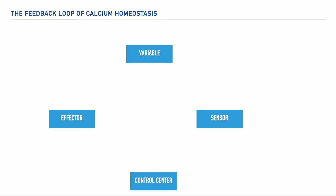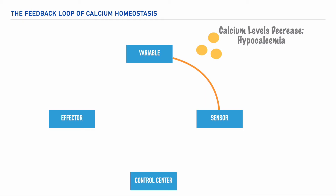So in our first example, let's imagine that we have someone who hasn't been supplementing their diet with sufficient amounts of calcium. It would be plausible for them to be in a state of hypocalcemia, which means low amounts of calcium. In this example, the decrease in calcium is the variable, and this decrease is going to be sensed by a sensor — the kidneys — as they monitor calcium levels within the blood.